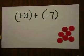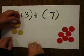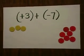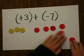To represent positive 3, you need 3 yellow tiles. And to represent negative 7, you need to add in 7 - seven negatives.